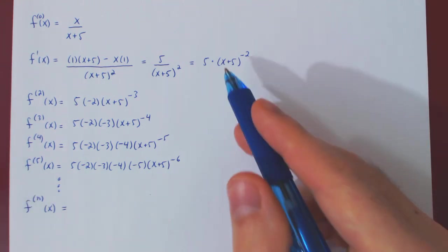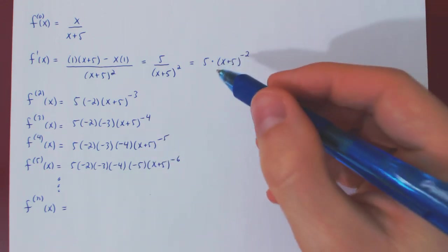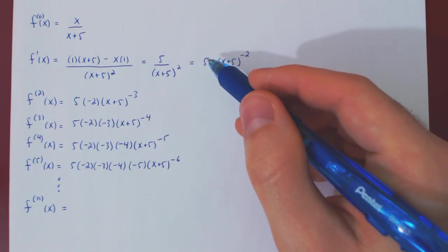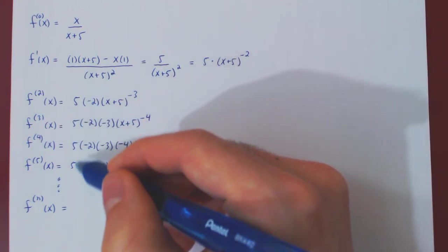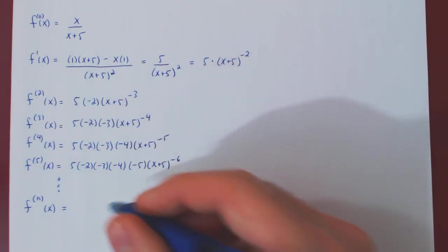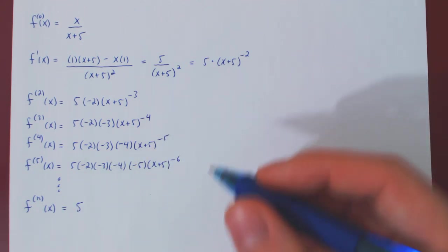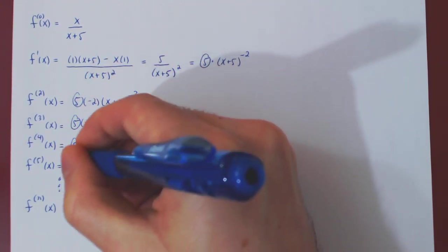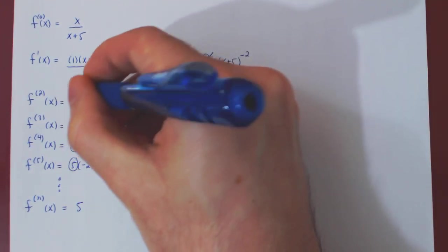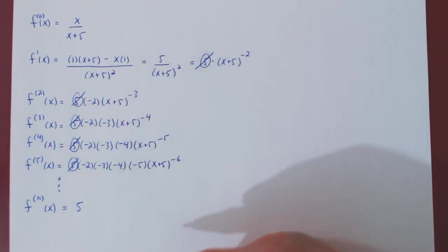There are a lot of pieces here. Let's try to find a pattern for each individual piece. From the first derivative onward, the multiple of 5 is always there, so it will be there in the general nth derivative. Now that we have captured it, we can ignore it as we have taken care of it.